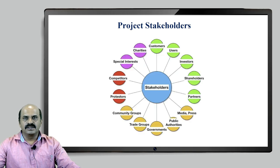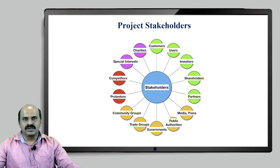You can see in this particular slide the list of stakeholders revolving around the project, which starts from the customers or users, then moves toward investors, and then you can see stakeholders such as partners, media, press, public authorities, government, trade unions, trade groups, and community groups — all of these are going to get affected by the project directly or indirectly, which is why they are termed project stakeholders.